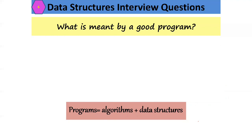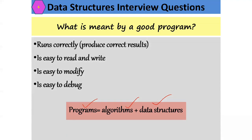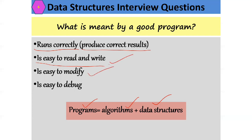What is meant by a good program? A program consists of an algorithm plus data structures. A program is a set of instructions written to achieve a particular task. A good program should run correctly — meaning it should produce correct results as intended. If you write a program to generate prime numbers, it should not generate the Fibonacci series. The program should also be easy to read, write, modify, and debug.